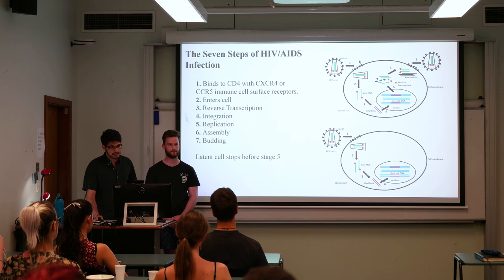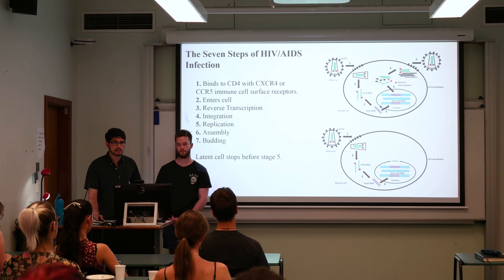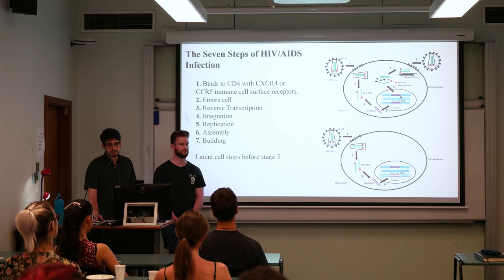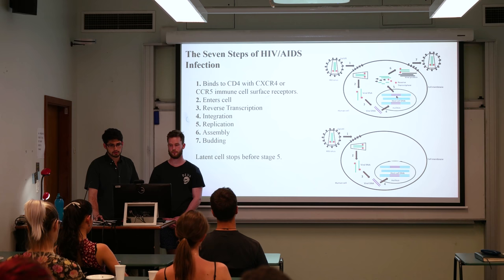We'll talk about those later. Once the virus enters the cell, it undergoes reverse transcription into viral DNA and is then incorporated into the host cell DNA like any normal virus. Basically, it hijacks the cell's reproduction cycle and uses it to produce more copies of itself, which can then bud off and infect other cells.